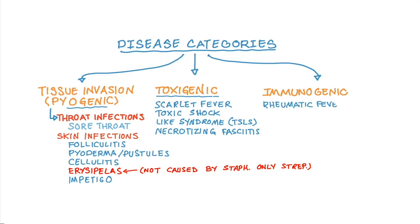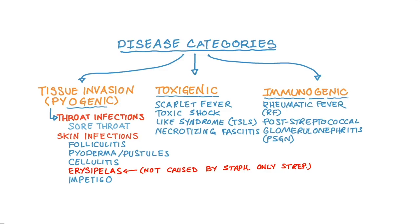Immunologic or immunogenic diseases are caused by a couple of mechanisms. One mechanism is that the M protein of the pathogen looks very similar to the proteins in our heart, so our immune system cross-reacts and accidentally starts attacking our own heart, thinking these are the M proteins of the pathogen. This is what causes rheumatic fever.